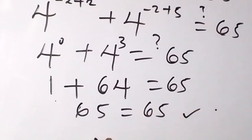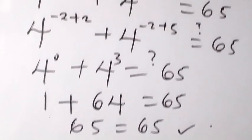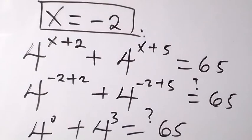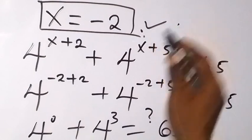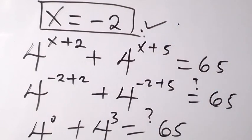Left hand side equals the right hand side. Therefore, we can conclude that x equals minus 2 is a solution. Thank you for joining us. Don't forget to subscribe and turn the notification bell on. See you in the next class. Bye for now.